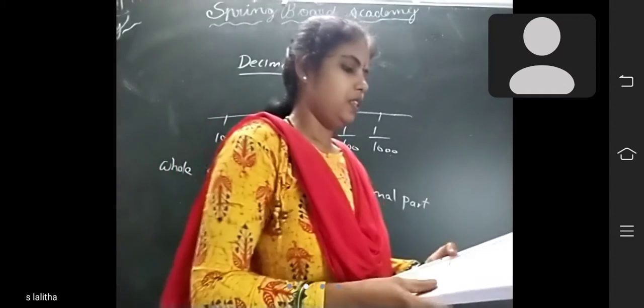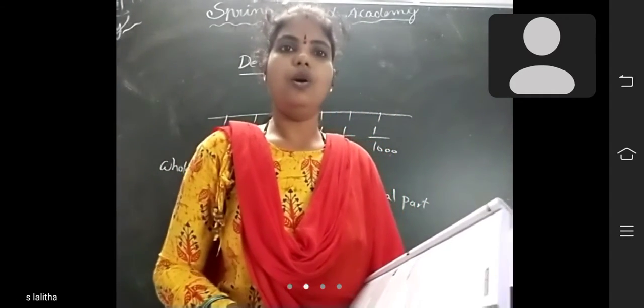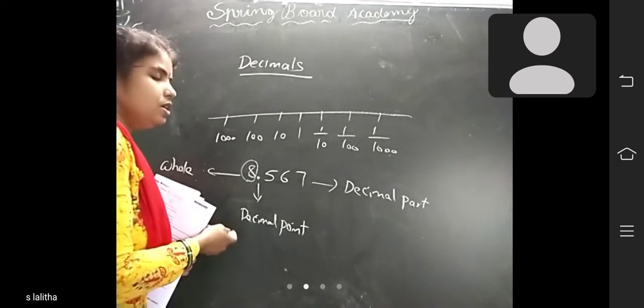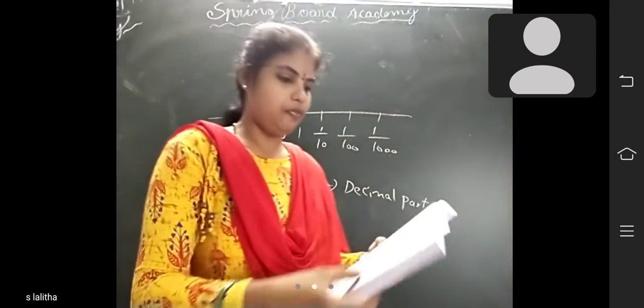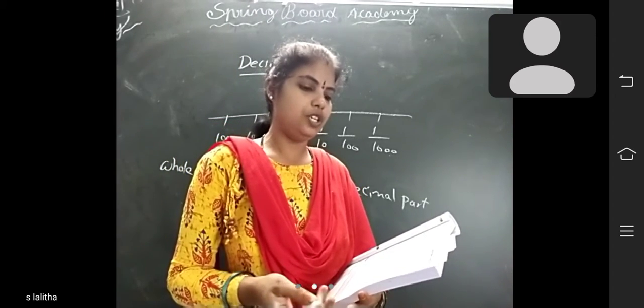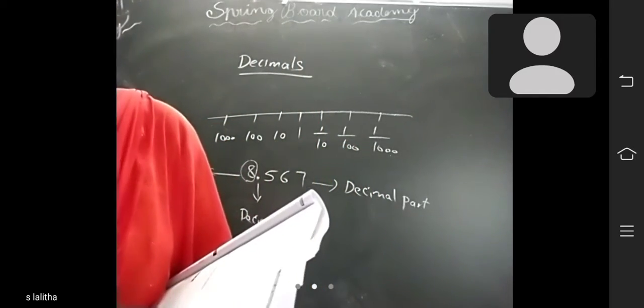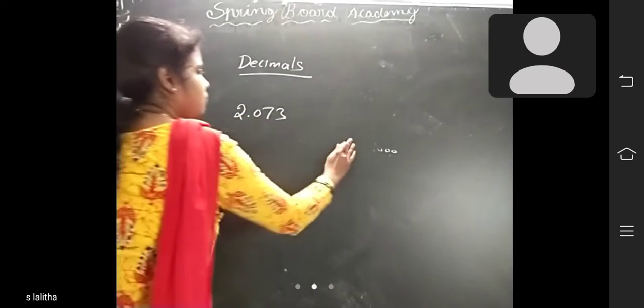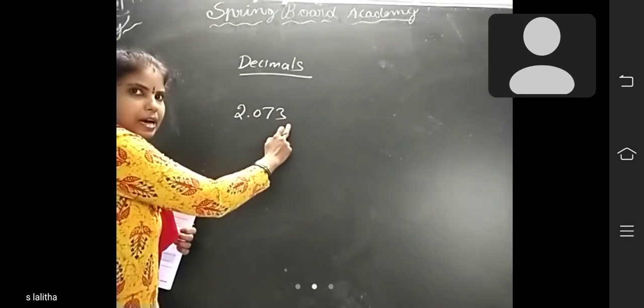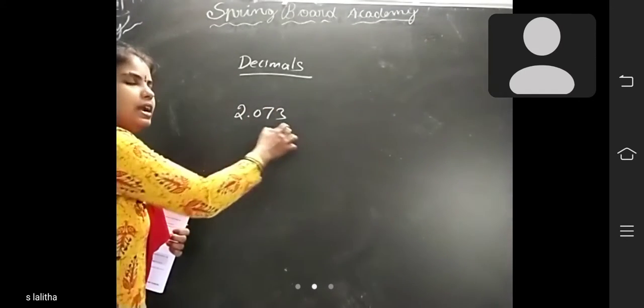Next, rules for significant figures. In a whole number, all the digits are significant. In a decimal number greater than 1, all the non-zero digits and zeros between them are significant. For example, 2.073 — this is a decimal number because a decimal point is present. It is greater than 1.